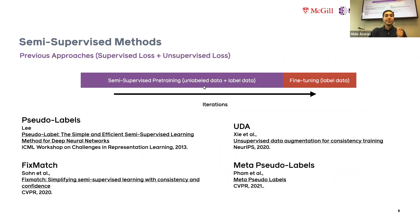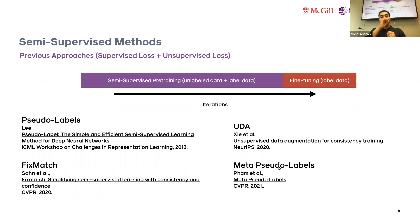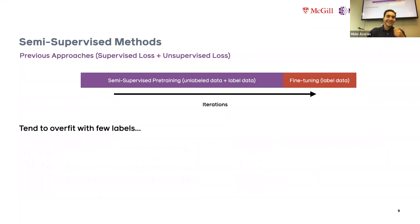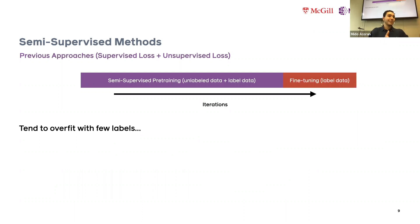Another set of approaches is semi-supervised pre-training, where you use both unlabeled and labeled data to learn image representations. Methods like pseudo labels, FixMatch, UDA, and Meta Pseudo Labels use an unsupervised loss plus a supervised loss, weighting them to avoid overfitting to the labeled data. The problem is they still tend to overfit with very few labels — if you have two images per class, it's very hard — and so they stop working below a certain amount of labeled images.